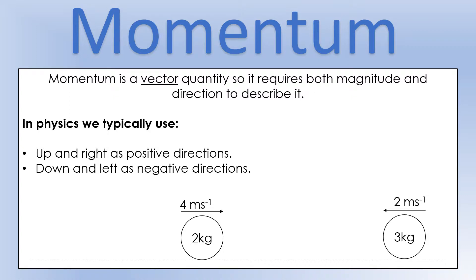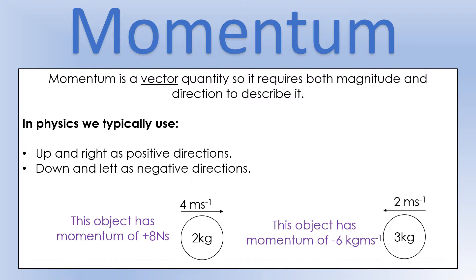Momentum is a vector quantity, so to describe momentum you need both magnitude and direction. We use signs to indicate the direction of momentum — typically up and right are positive, and down and left are negative. So the object on the left has a momentum of plus 8 Newton seconds, because mass times velocity gives 8 and it's moving right. The other object has momentum of minus 6, because 2 times 3 gives 6 and it's moving left.